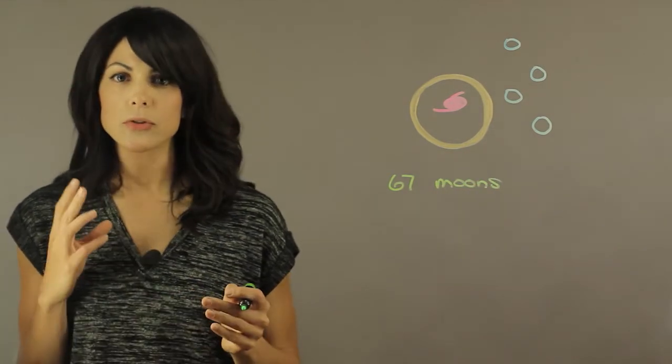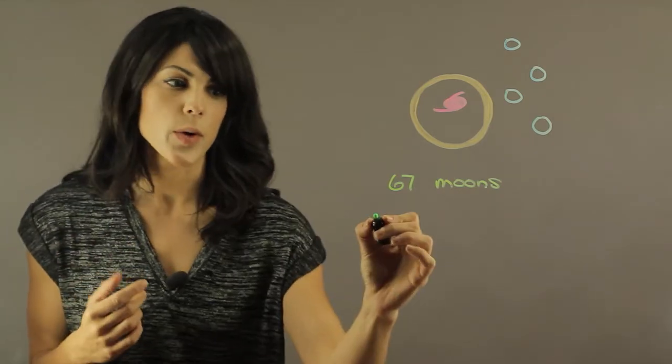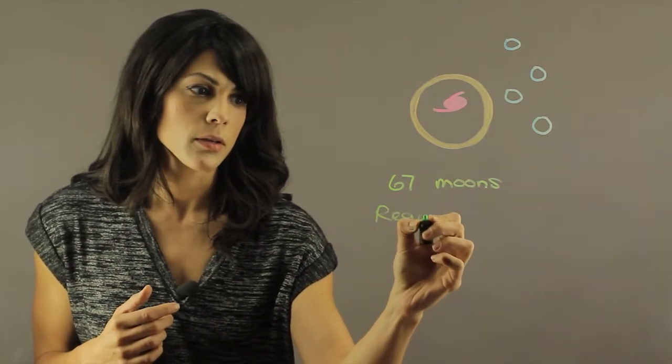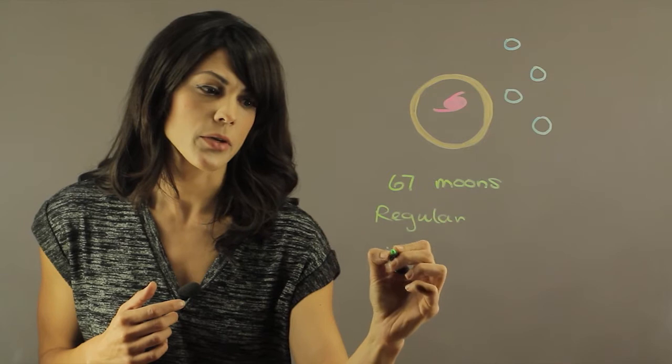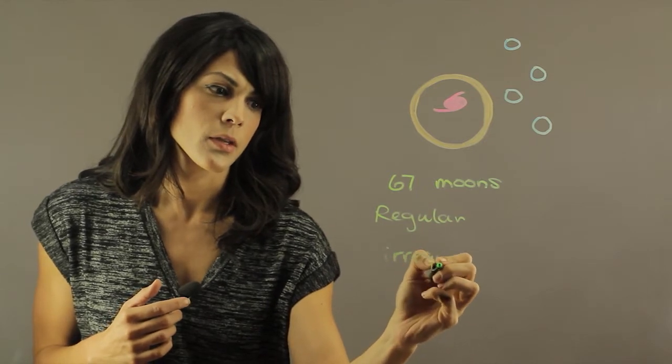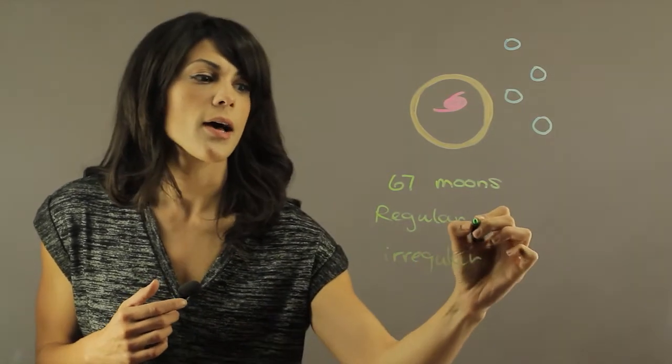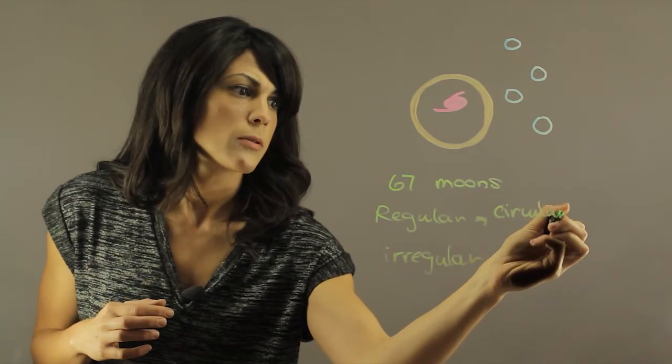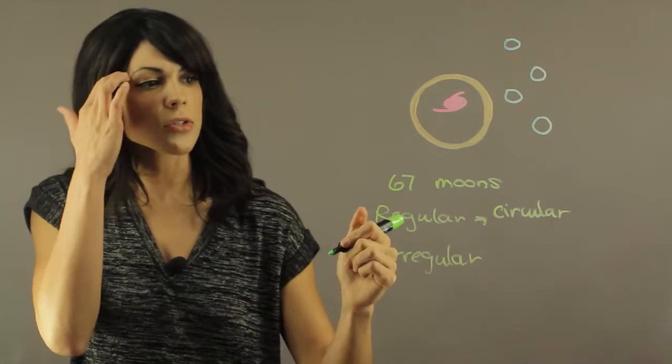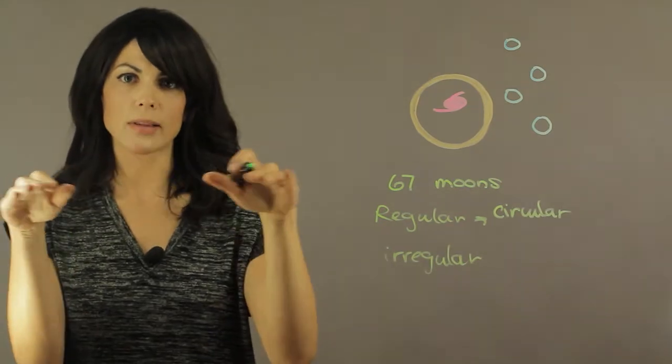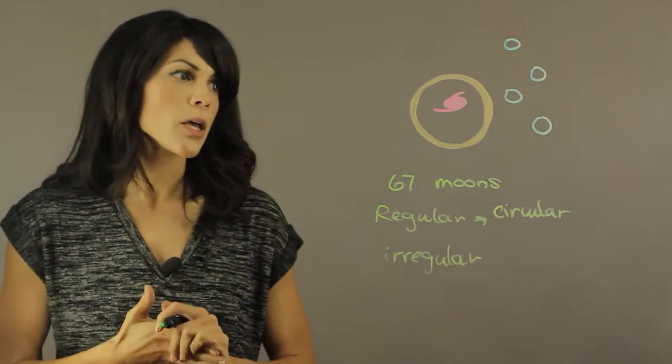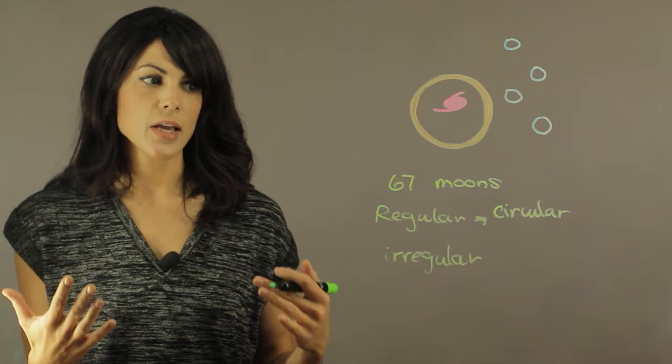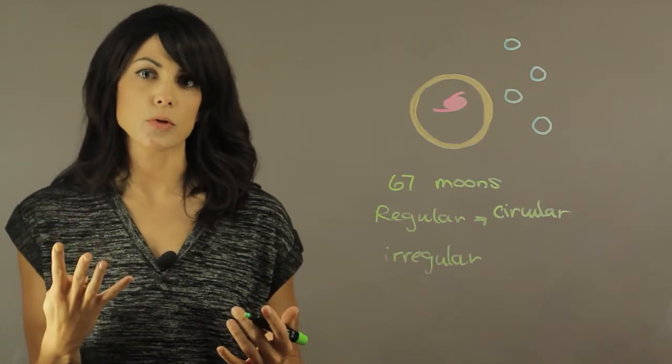Now it splits into two real categories: you have the regulars and the irregulars. So the regular moons have circular orbits, more or less, and they also have barely no inclination, so they're in the orbital plane of Jupiter. This actually contains the four Galilean moons, which are the most important moons of Jupiter.